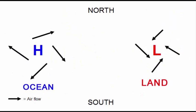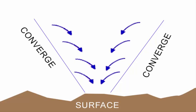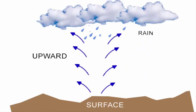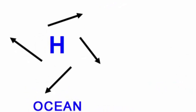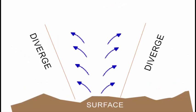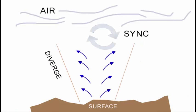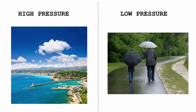The inward movement of air in low pressure causes air to converge, and since it cannot move downward due to the surface, the air is forced to go upward, leading to condensation and precipitation — rainfall. The opposite occurs with high pressure. Air moves away from the high pressure center at the surface, which is called diverging. As a result, air from above must sink to take its place. This is why high pressure leads to good climate and low pressure leads to rainy climate.